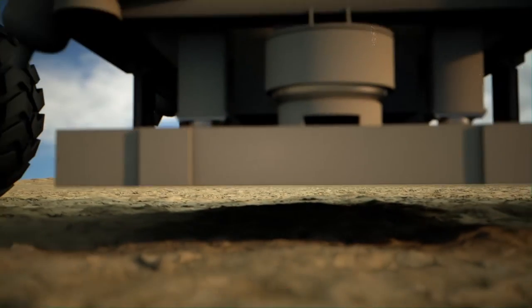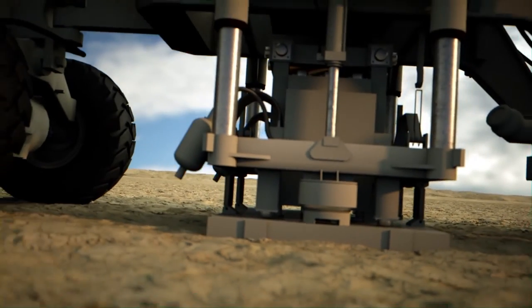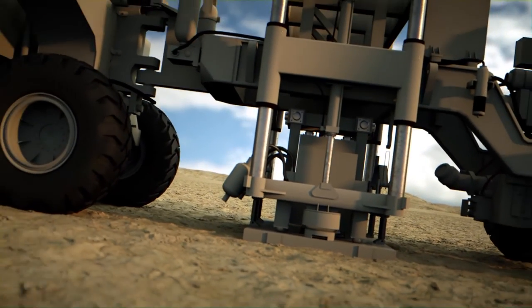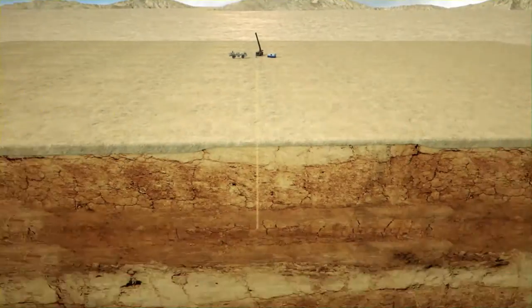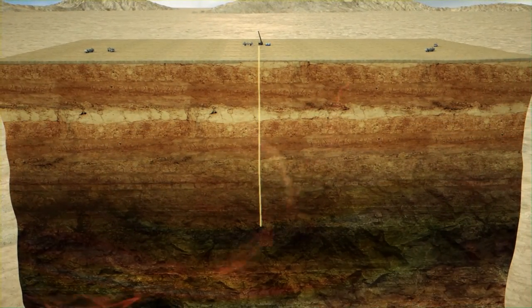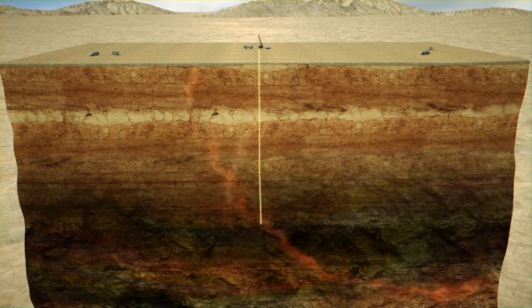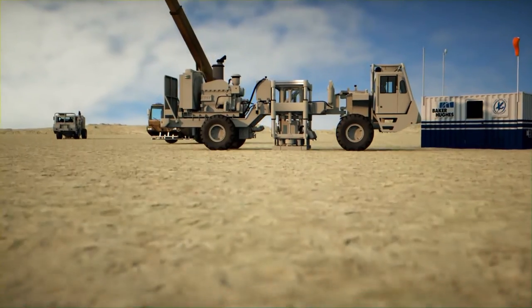Once the geophone receivers are deployed in the well, a large truck called a vibrator sends a small seismic wave that travels down through the earth reflecting energy off rock layer interfaces that will be recorded by the receivers in the well.